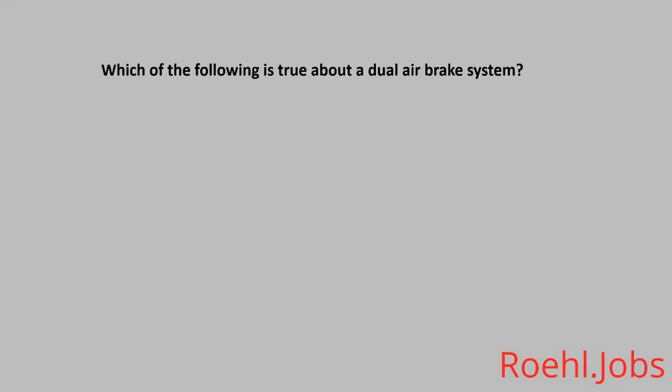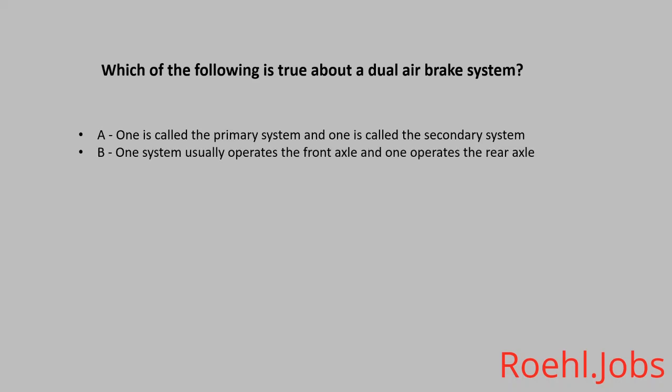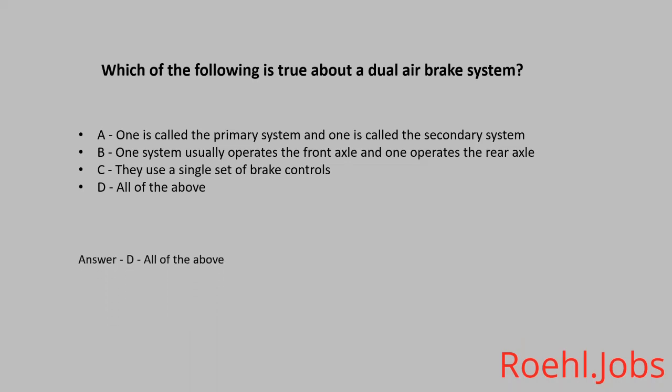Which of the following is true about a dual air brake system? A. One is called the primary system and one is called the secondary system. B. One system usually operates the front axle and one operates the rear axle. C. They use a single set of brake controls. D. All of the above. The answer: D, all of the above.